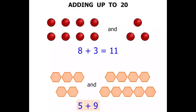So now what is 5 plus 9? Well let's count them all together. 1, 2, 3, 4, 5, 6, 7, 8, 9, 10, 11, 12, 13, 14. So 5 plus 9 equals 14.